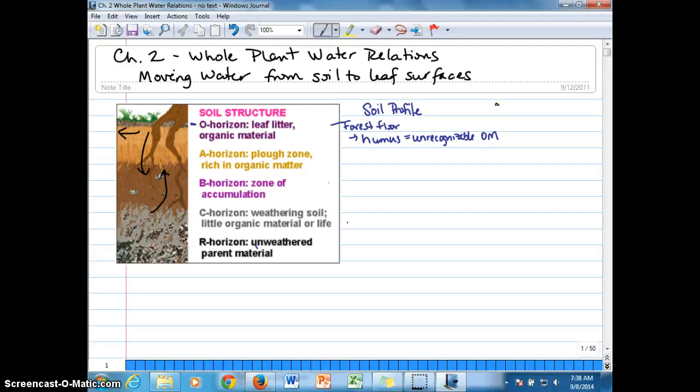The next layer is the A-horizon, which is what we refer to as the topsoil, and it receives organic matter that moves down from the O-horizon. Because it's rich in organic matter, it's also rich in nutrients.